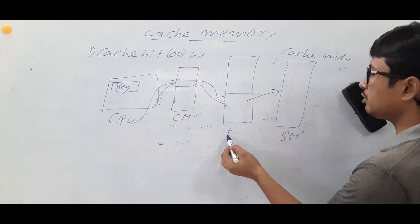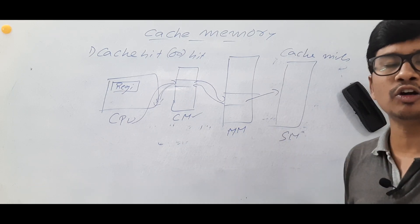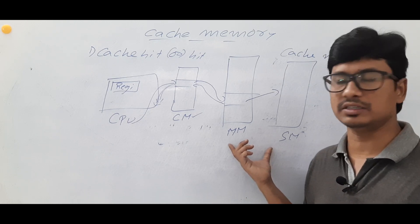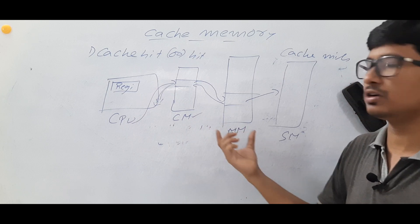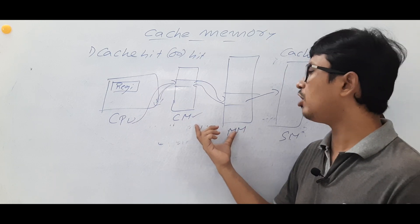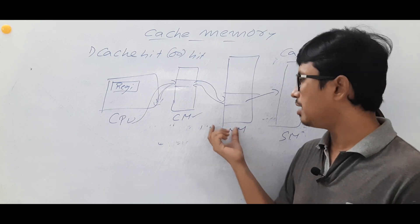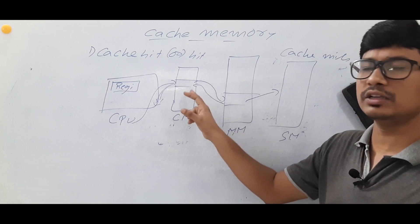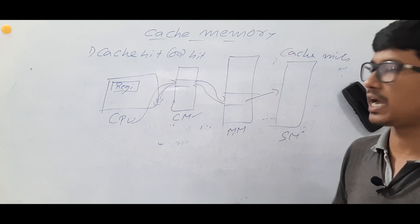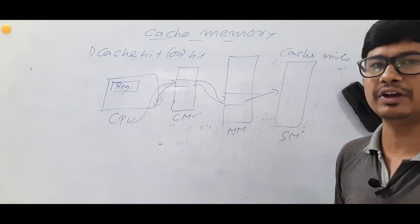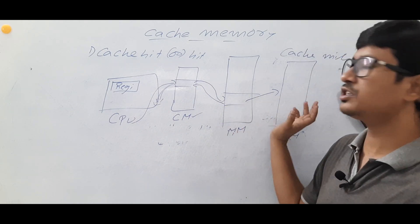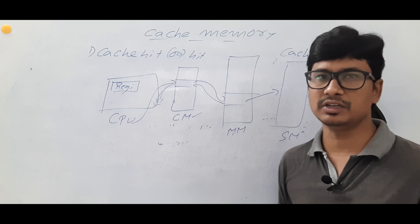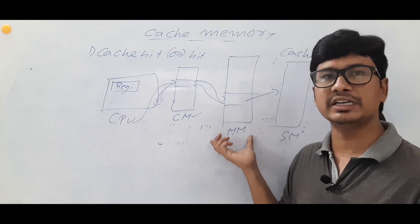The concept of secondary memory to main memory — including paging — will be discussed in the operating system course. In this cache memory and computer organization course, we focus on main memory and cache memory. So if an element is not in the cache memory it is a cache miss, and we search in the main memory; if not there, the main memory fetches it from secondary memory.